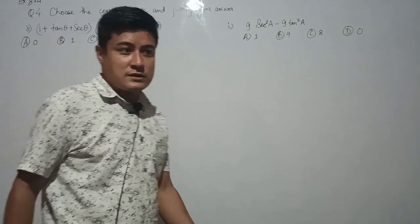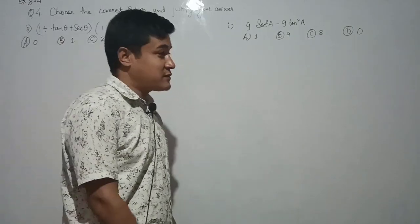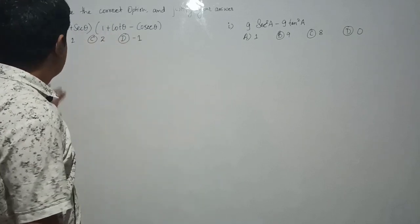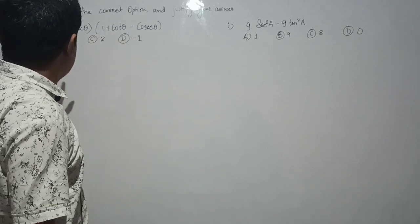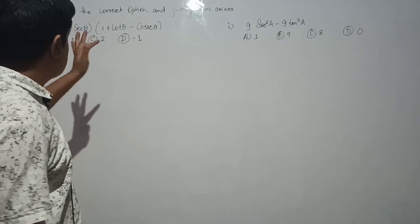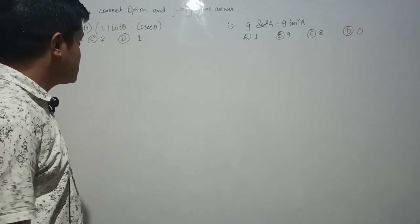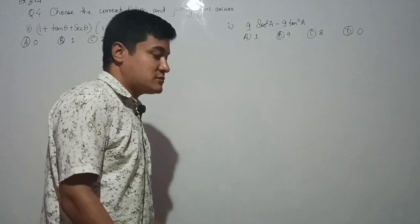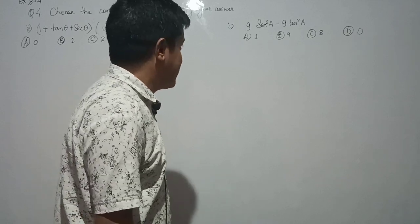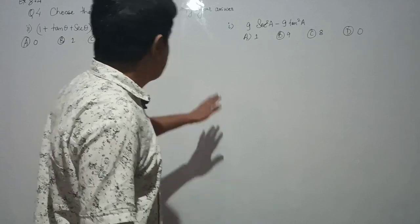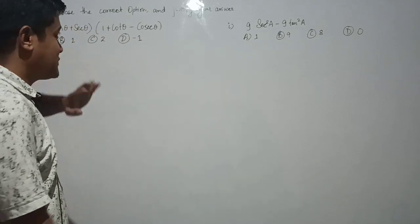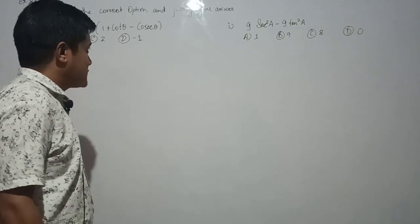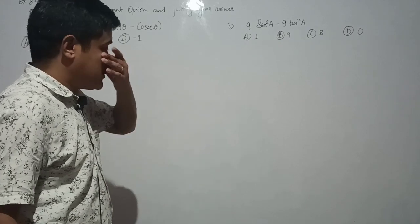Hello students, welcome back to Basic Academic Solution. We are doing Exercise 8.4, Question number 4 — choose the correct option and justify your answer. I have written Question 1 on the right hand side and Question 2 on the left hand side.